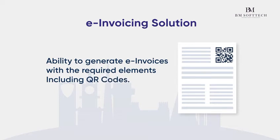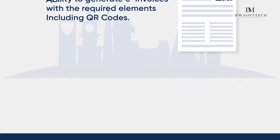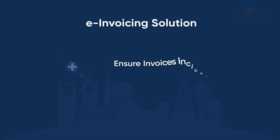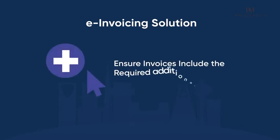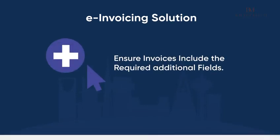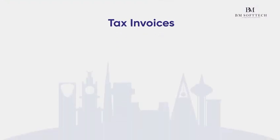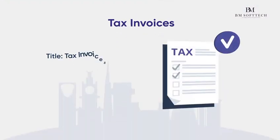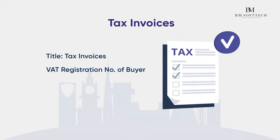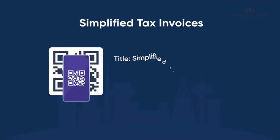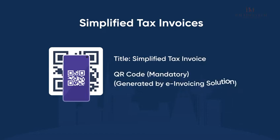The e-invoicing solution must have the ability to generate e-invoices with the required elements, including QR codes. Ensure invoices include the required additional fields: Tax invoices must include the title 'Tax Invoice', VAT registration number of the buyer, and a QR code (optional). Simplified tax invoices must include the title 'Simplified Tax Invoice' and a QR code.